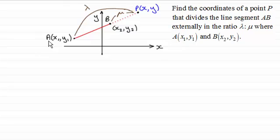The coordinates of A are x1, y1 and the coordinates of B are x2, y2. Now as a reminder of external division of a line segment AB, I've got this example here where I've got the line segment AB and the point P divides AB externally in the ratio 4 to 3.